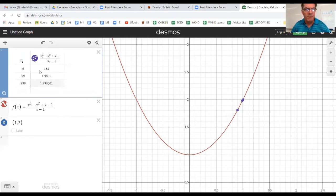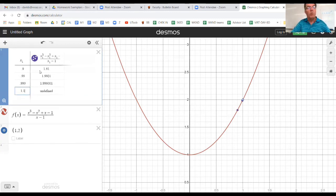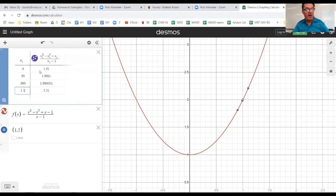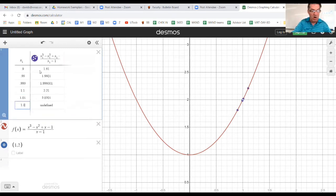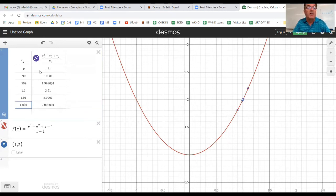We need to approach our value, our one, from the right side. And forgive me, I haven't spoke. We are approaching two, right? We went from 1.81 to 1.98 to 1.99. So we're getting really close to two as x gets really close to one. But we need to approach it from the right side as well. Let's try 1.1. And we have 2.21 as our y-value. Let's try 1.01. Now we're at 2.02. Try one more. 1.001. You can see that now our y-value is 2.002. So getting closer and closer to two.